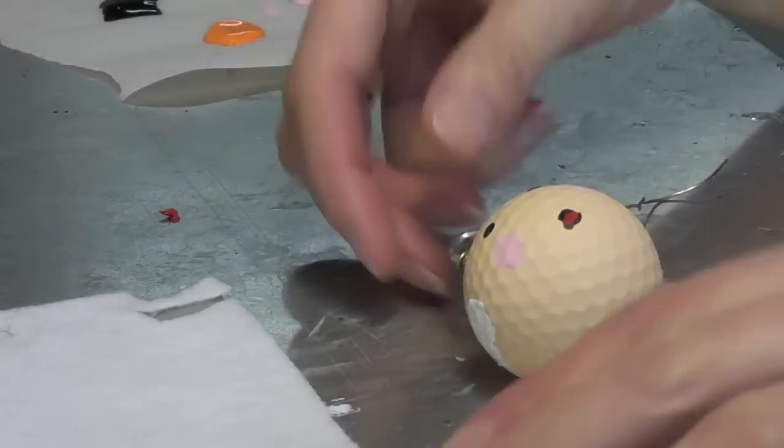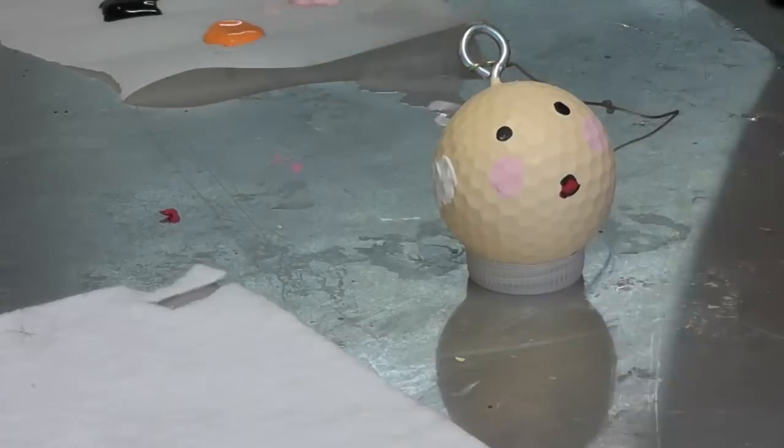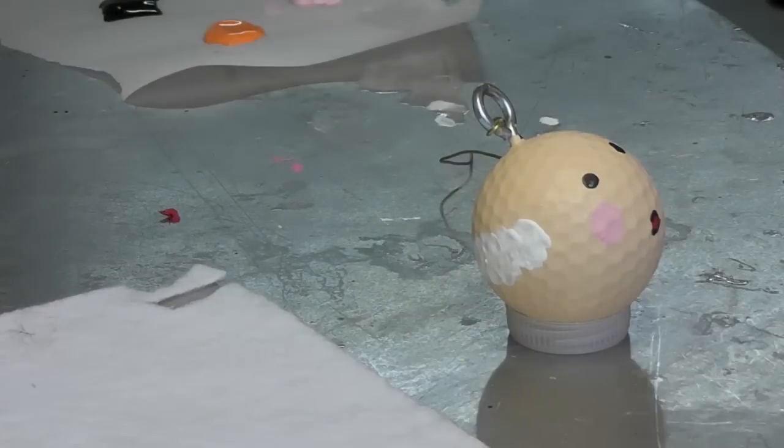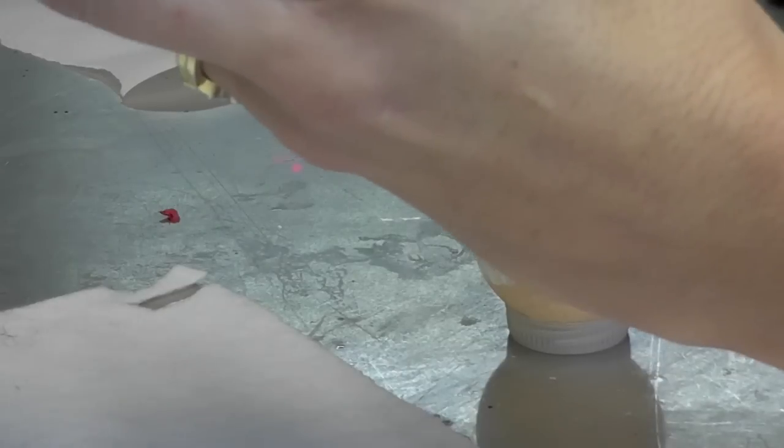Now Santa is pretty much dried, so what we're going to do is we're going to finish embellishing him. He's going to need a hat, a beard, mustache, and some eyebrows. You can use hot glue if you want, or you can use like a tacky glue, or E6000 would probably work fine, and I'll probably use a combination.